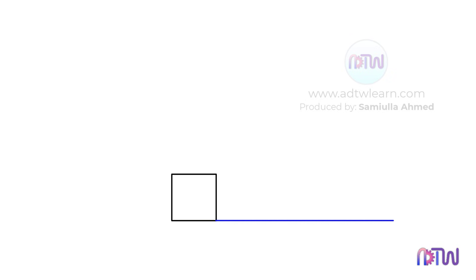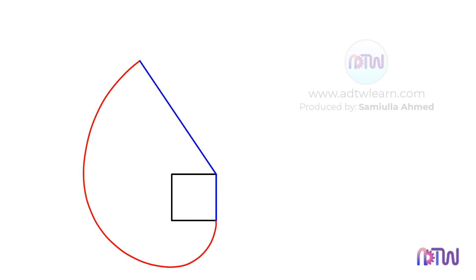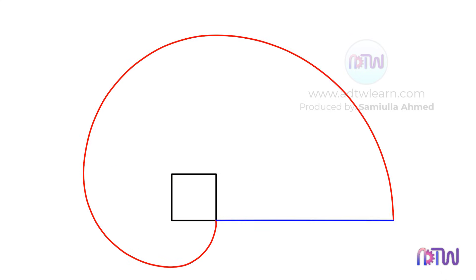Suppose there is a square shape that is wound with a rope, whose length is equal to the perimeter of the square. When we unwind the rope, the path taken by the endpoint of the rope while unwinding is known as the involute.